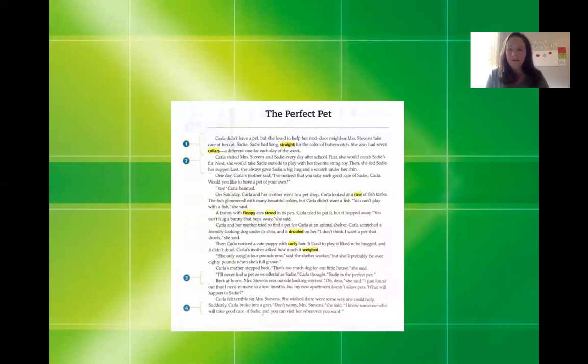So those are the vocabulary words that you're going to be finding in Henry and Mudge. We also are going to be listening to a story called The Perfect Pet that has those same vocab words in there. So I'm going to go ahead and read you the story of The Perfect Pet and ask you some listening comprehension questions as we go along.